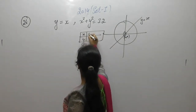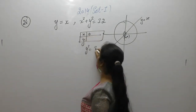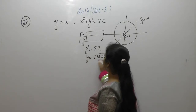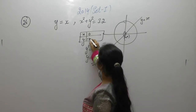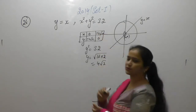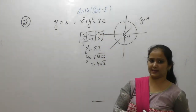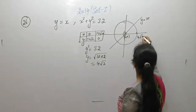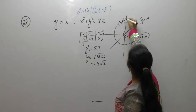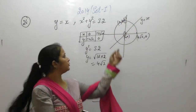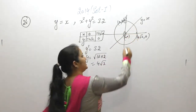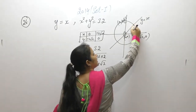First, find the points on the circle. When x is 0, y² = 32, so y = ±4√2. When y is 0, x = 4√2. So the radius is 4√2, giving points (4√2, 0) on the x-axis and (0, 4√2) on the y-axis.